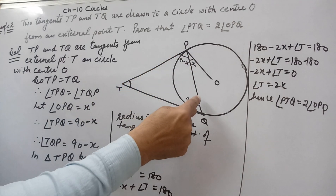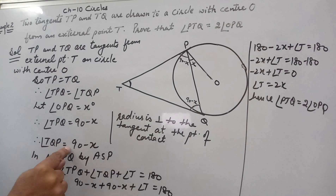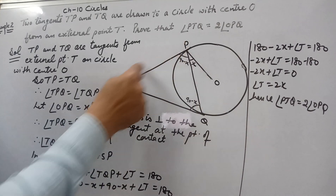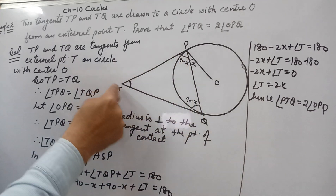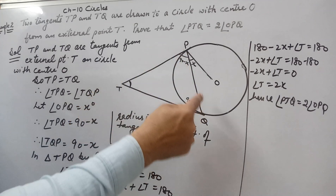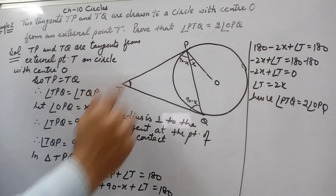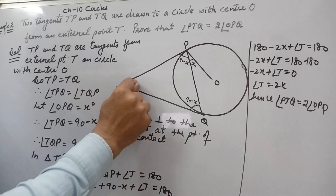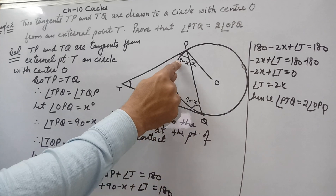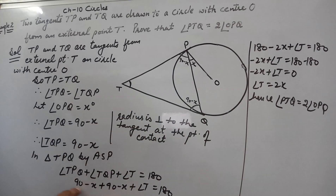We know the radius is perpendicular to the tangent, so the full angle OPT is 90 degrees. Since angle OPQ is x, angle TPQ is 90 minus x. Since angle TPQ equals angle TQP, both angles are 90 minus x. Now in triangle PTQ, we apply the angle sum property.